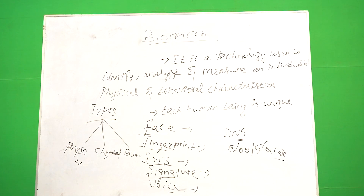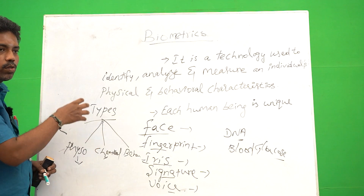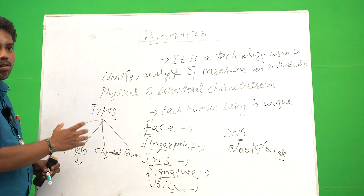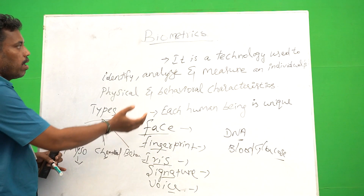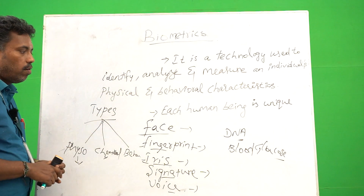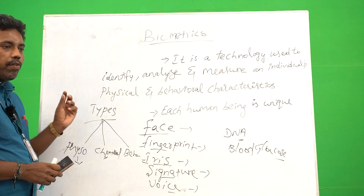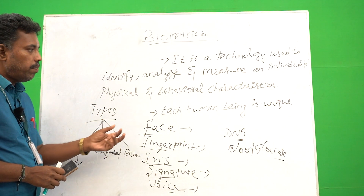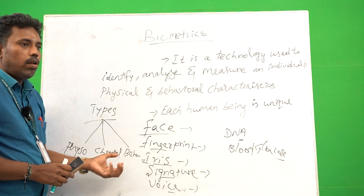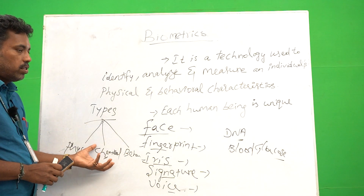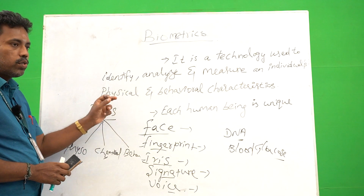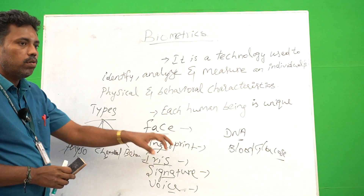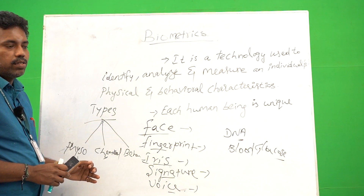So we need to identify and store these in the database. After that, we are going to check for that — whether the correct person is coming to that place or not. These things are all important in biometrics. The technology is used to identify each person uniquely, store that information, and finally check it against the database on any kind of device.